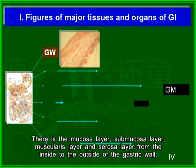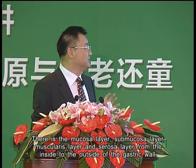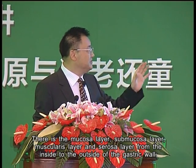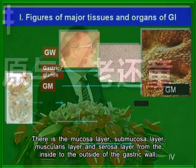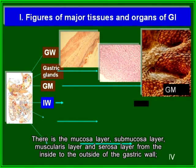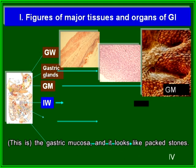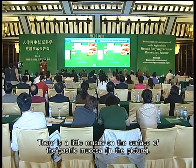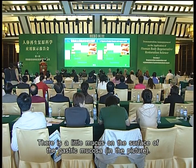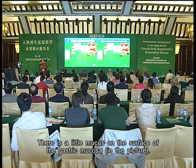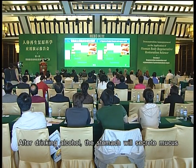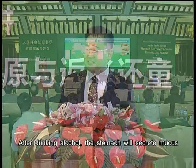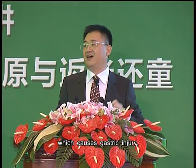There is the mucosa layer, submucosa layer, muscularis layer, and serosa layer from the inside to the outside of the gastric wall. The gastric mucosa looks like packed stones under the electron microscope. There is a little mucus on the surface of the gastric mucosa. After drinking alcohol, the stomach will secrete mucus, which causes gastric injury.